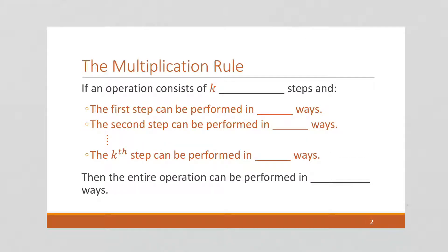So we're going to say, if an operation consists of k independent steps — that's really important. We'll see later what happens if the steps are dependent. But we're going to say these are independent steps. The way you do step two doesn't depend in any way on the way you did step one. We have a bunch of steps we have to do, but I don't care how I did the previous steps — I have so many choices for doing the next step.